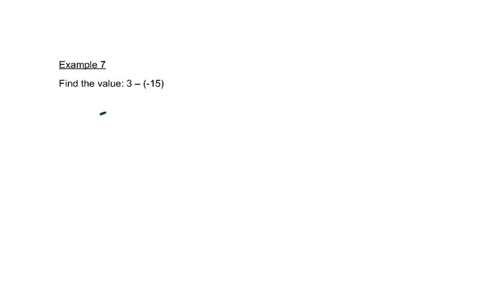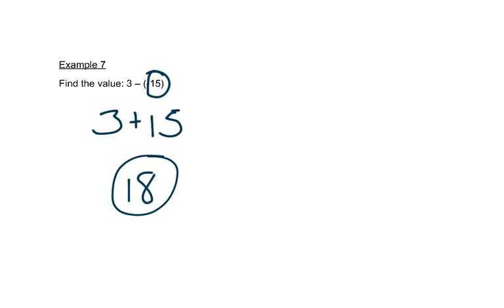Let's find the value of this one. We're going to start with three, the minus becomes plus, and the opposite of negative fifteen becomes a positive fifteen. So three plus fifteen is eighteen — and that's our answer. In your calculator you can do this as well: you would type three, then use your normal minus sign, and the negative sign is usually at the bottom in parentheses. Then type in the fifteen and you'll still get eighteen as your answer.